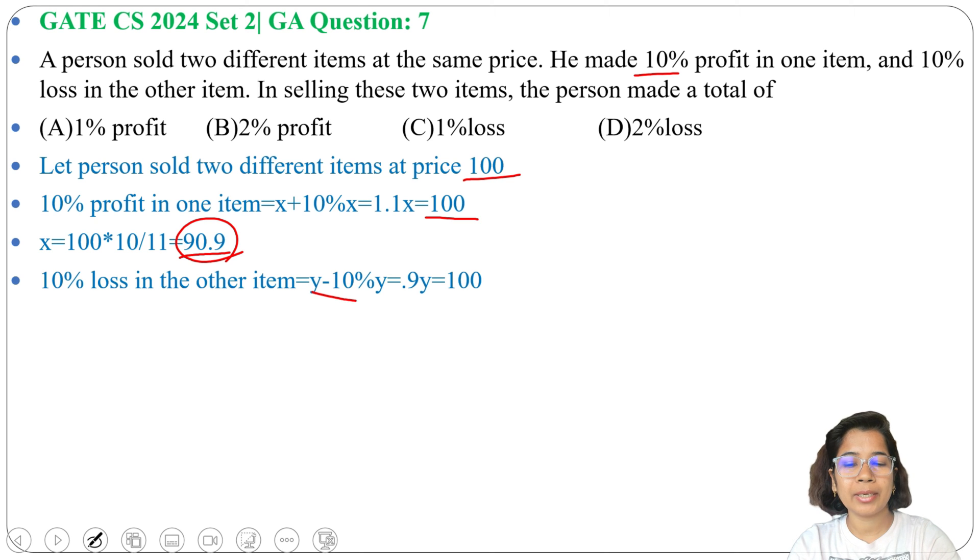For the other item, Y minus 10% of Y equals 0.9Y equals 100. What is the Y value? Y equals 100 divided by 0.9.